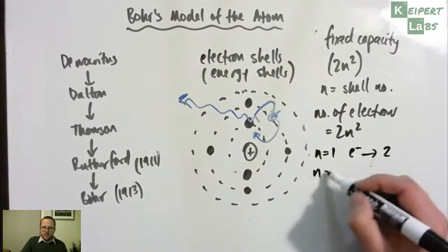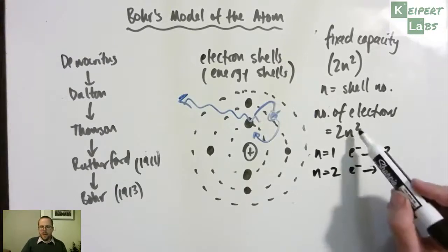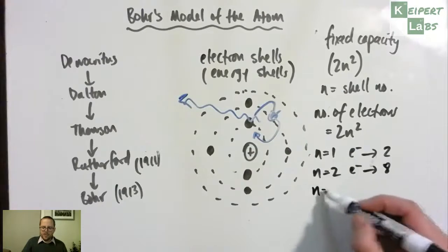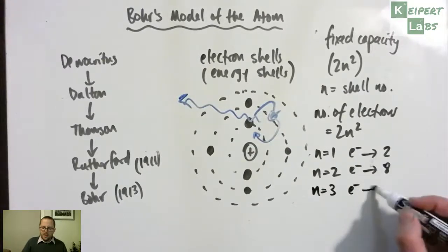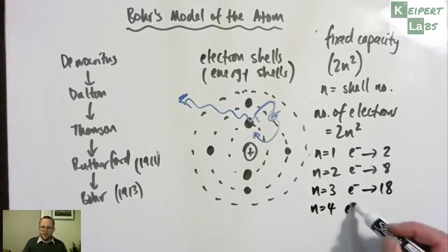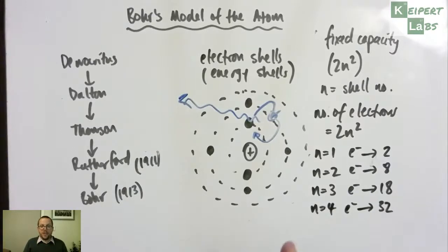If n equals 2, the electrons equals 8. 2 times 2 squared, which is 4, 2 times 4 is 8. When n equals 3, the electrons equals 18. n equals 4, electrons equals 32. So what we see, as we get further and further on, we add more and more shells, that we can fit more and more electrons in them.